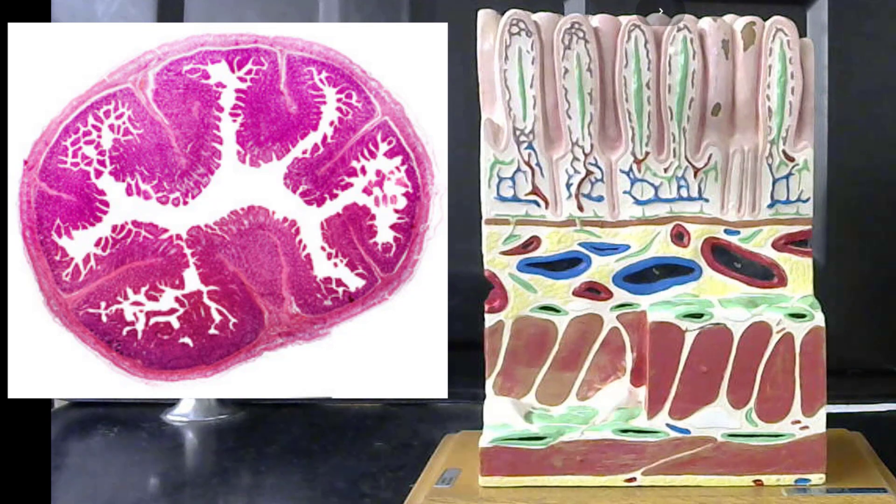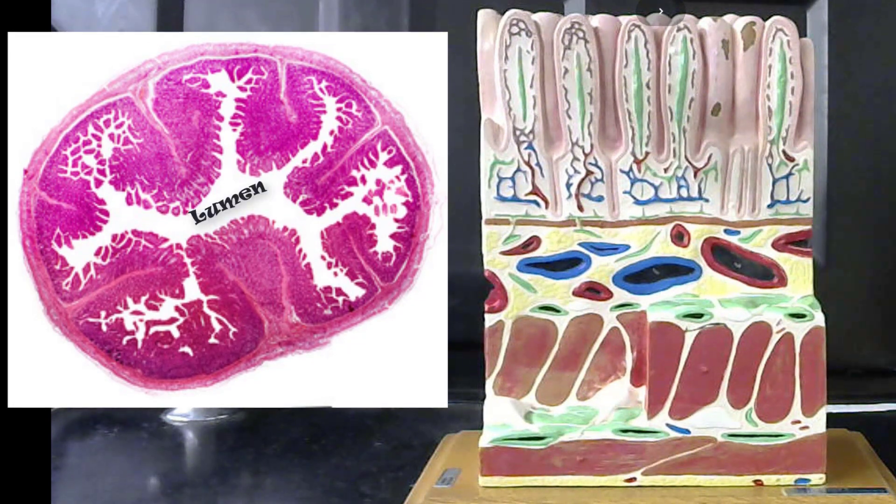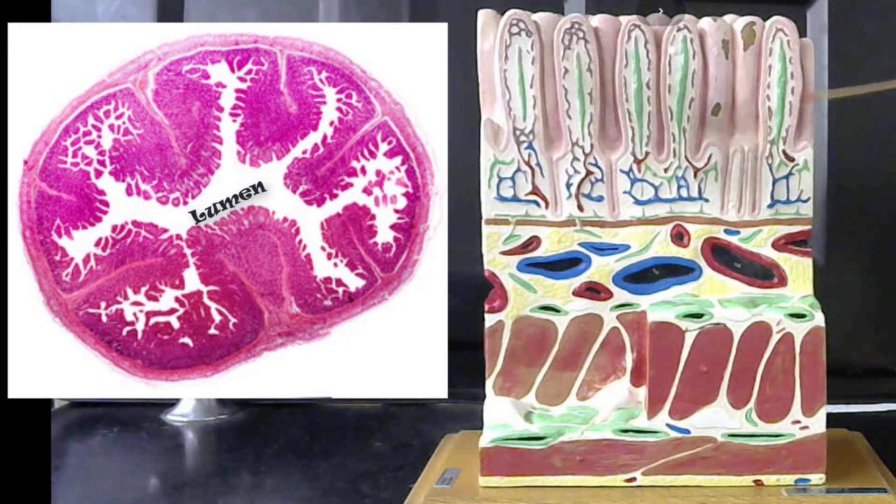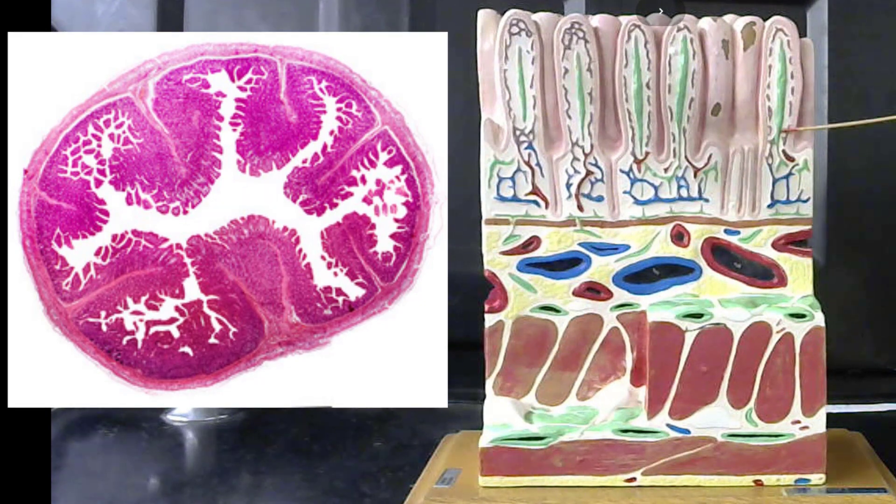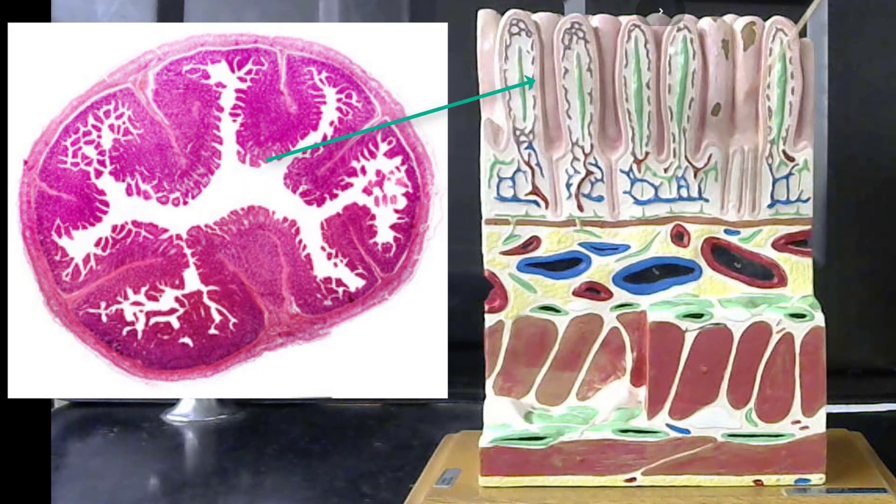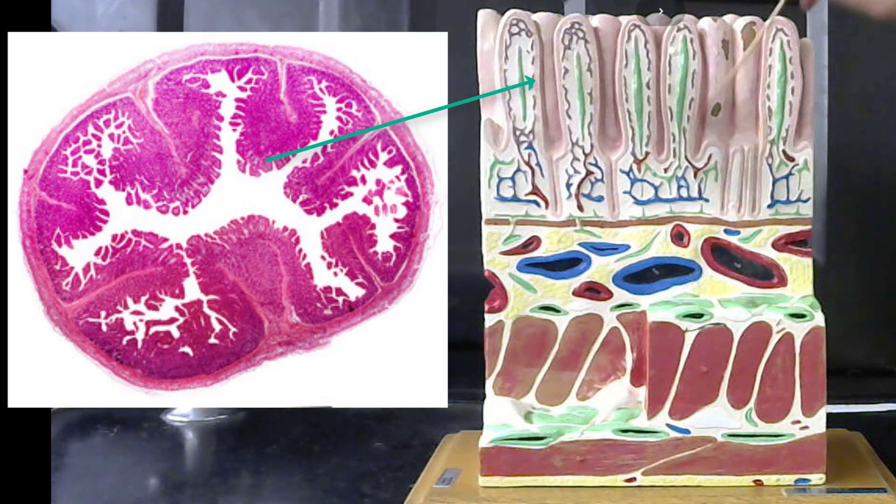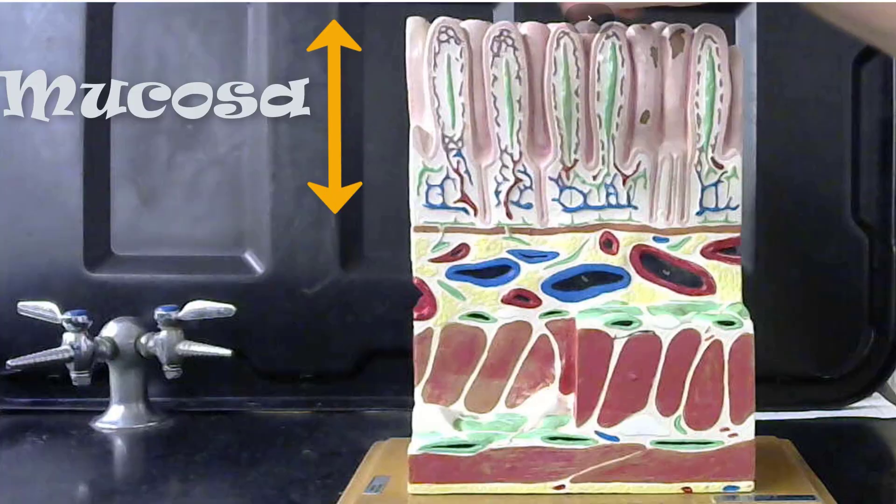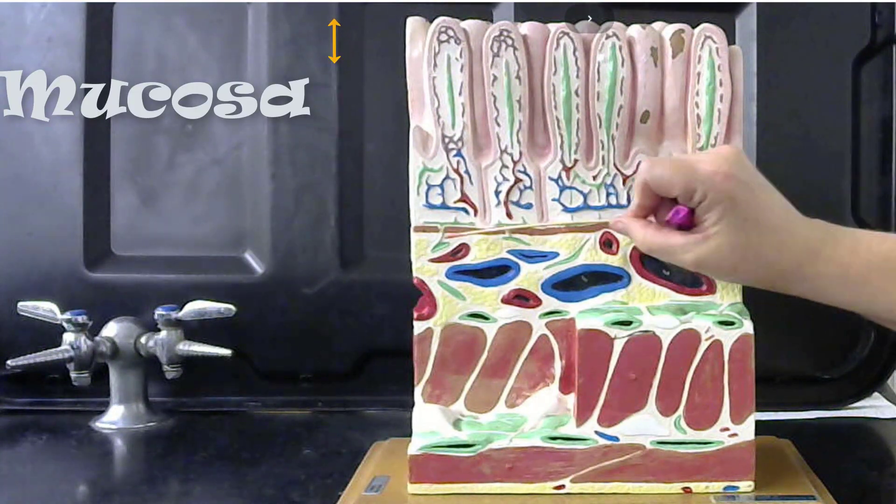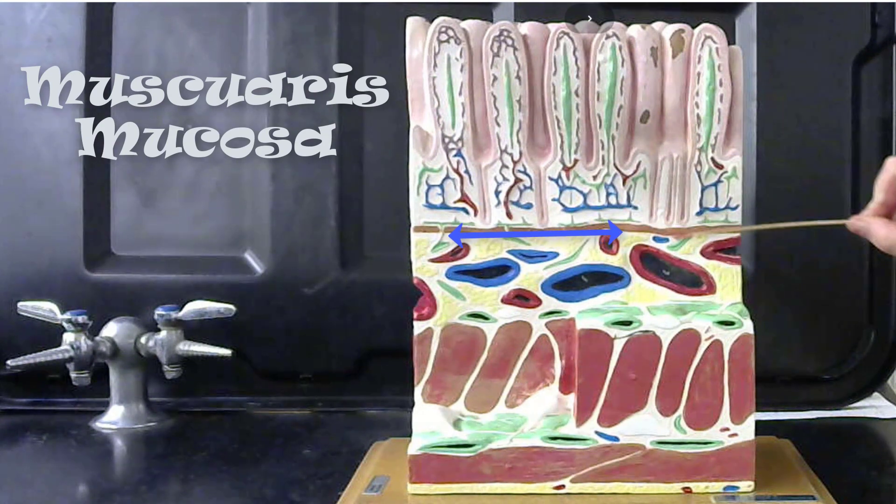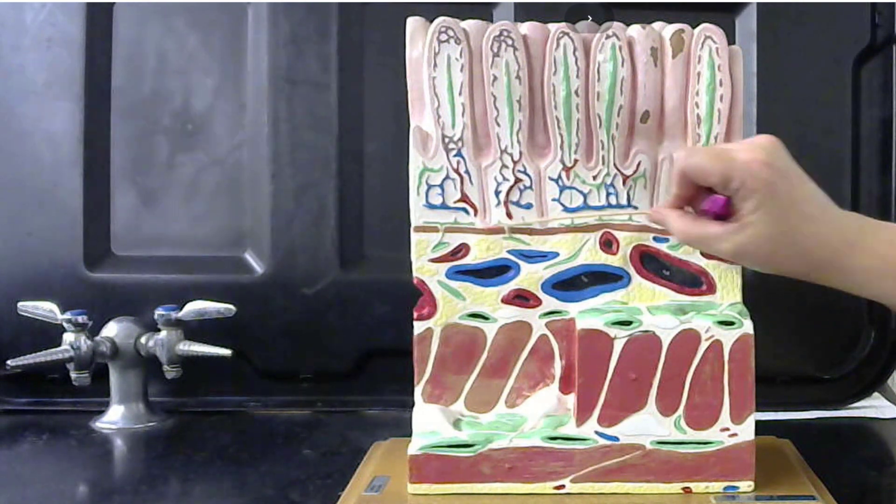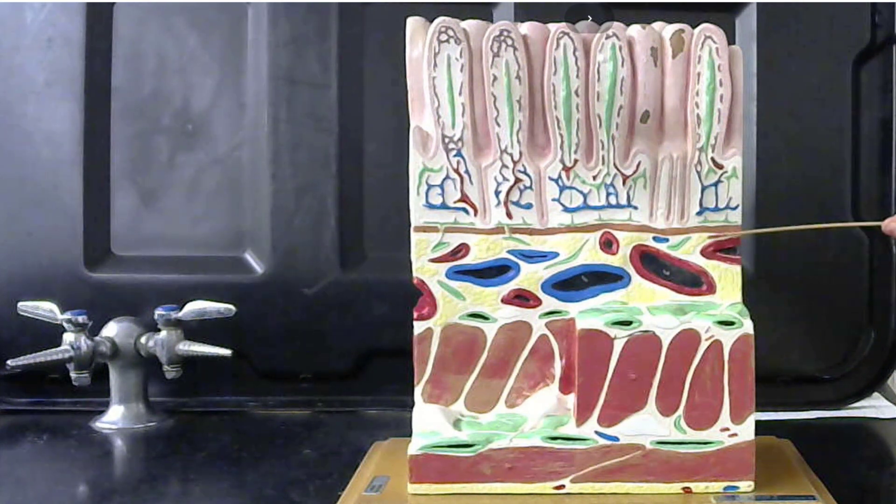Here is a model of the intestinal wall of the small intestines. This upper apical layer is actually the deepest layer in the body and it lines the lumen of the small intestines. This layer is called the mucosa. At the border of the mucosa we have the muscularis mucosa.